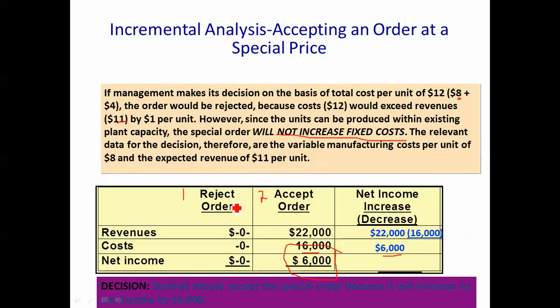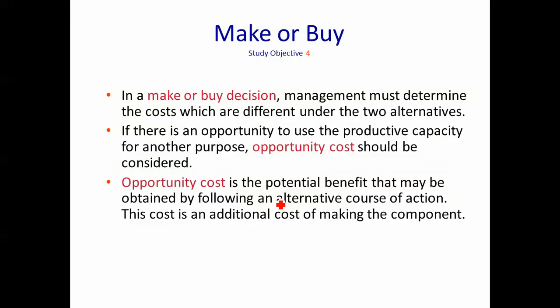Now we have another decision type: make or buy. In the make-or-buy decision, we decide whether to make a component ourselves or buy it externally. There may be something called an opportunity cost, which we will look at. An opportunity cost is a benefit that could be obtained by following an alternative course of action. If you don't follow that alternative, it becomes an additional cost of the other choice.